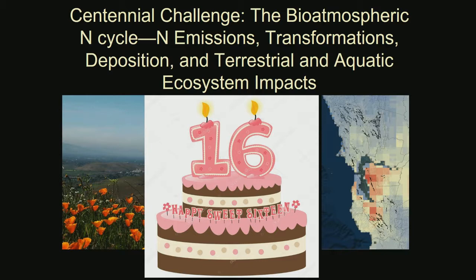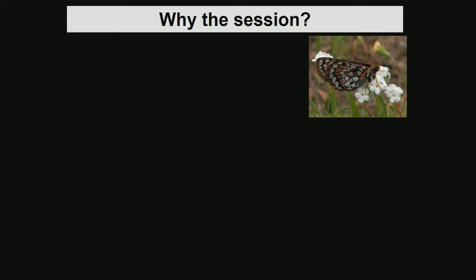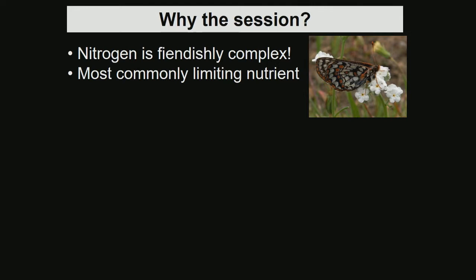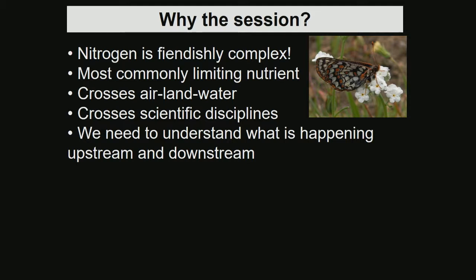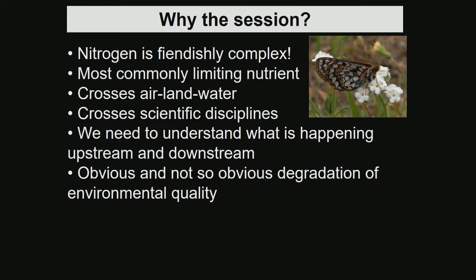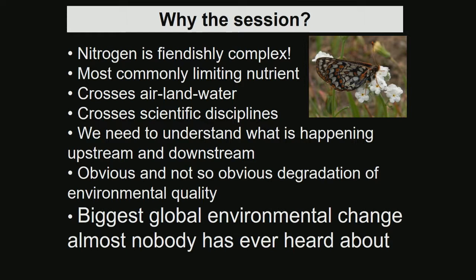So why do we do this session? Because nitrogen is fiendishly complex. It's the most common limiting nutrient on the planet. It crosses air, land, and water in all directions. It crosses scientific disciplines, and AGU is by far the best place to interact between deep disciplines. We all need to understand what's happening upstream and downstream of us in the nitrogen cascade — a lot of obvious and not-so-obvious degradation of environmental quality.